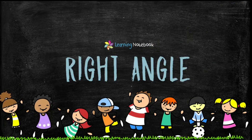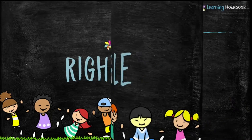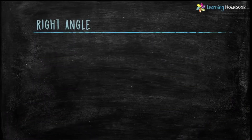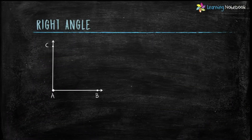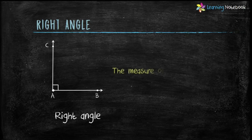Next type of angle is right angle. The measure of a right angle is exactly 90 degrees. So here, angle BAC is a right angle.